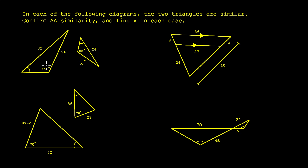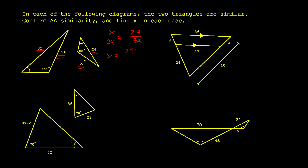From there, we need to match up the sides to the angles. Across from the 105 degrees in the first triangle we have 32, and across from the 105 degrees in the second triangle we have 24. Then across from the single tick mark on this triangle we have 24, and across from the single tick mark on this triangle we have X. So X over 24 equals 24 over 32. Rearranging, X equals 24 times 24 over 32. Dividing 24 and 32 by 8 gives 3 and 4, then 24 over 4 is 6, and 6 times 3 is 18. So X equals 18.